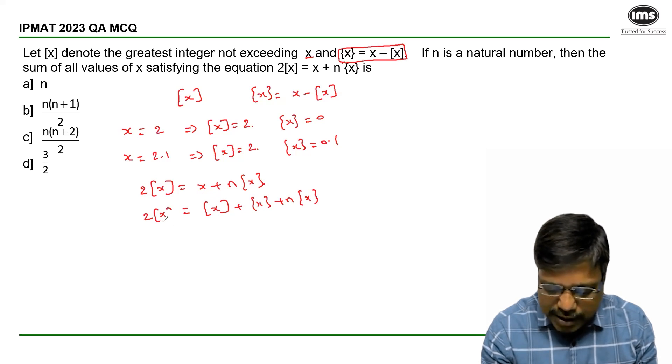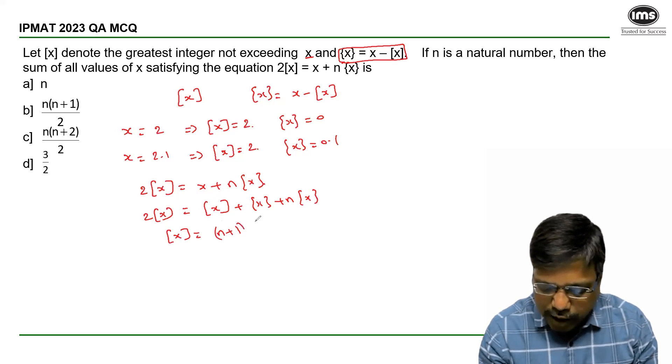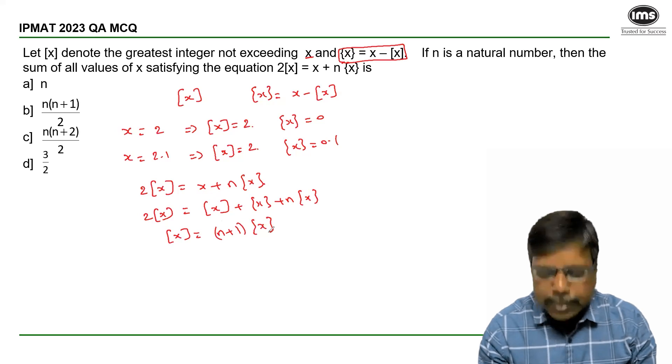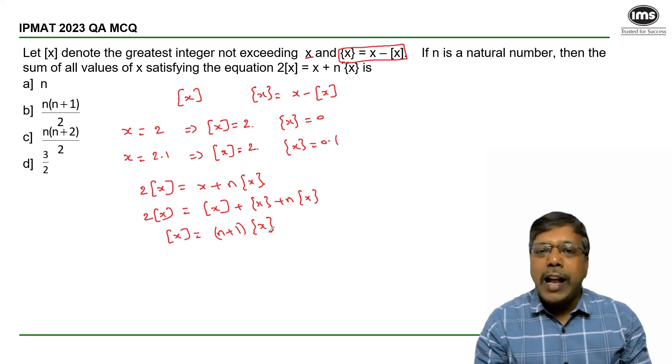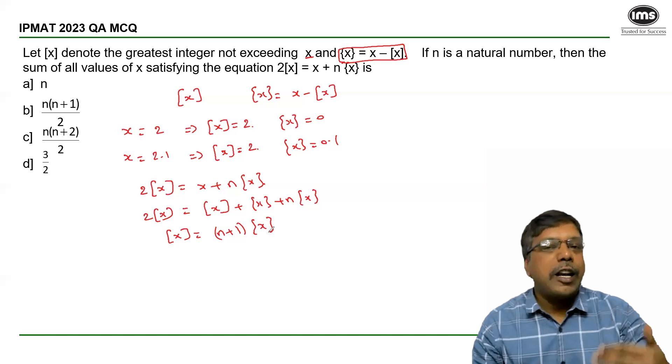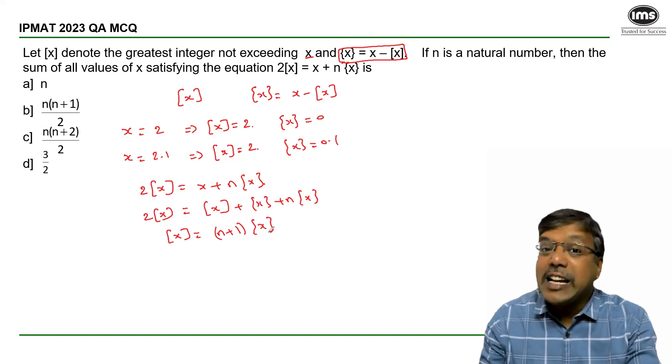Which means this equation becomes [x] = (n+1){x}. Now I need to calculate all possible values of x for different values of n, and which answer option represents their sum.